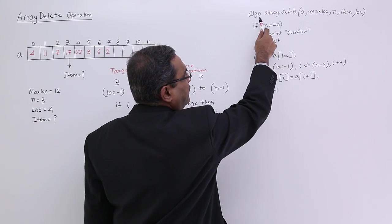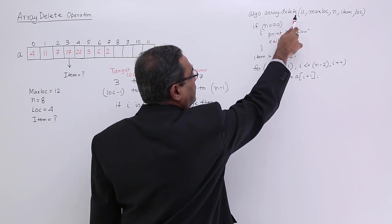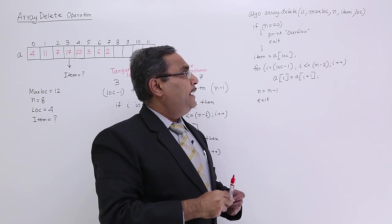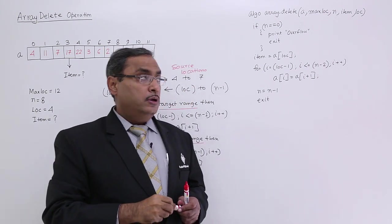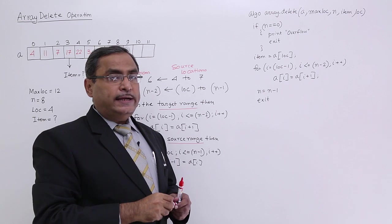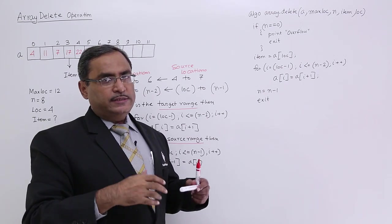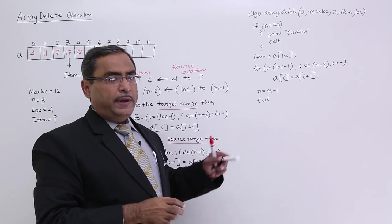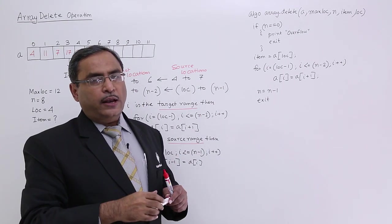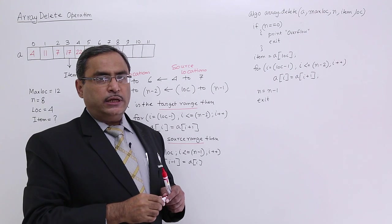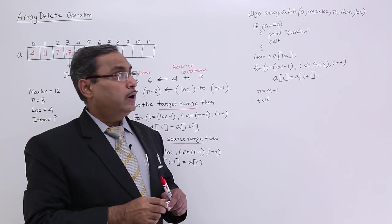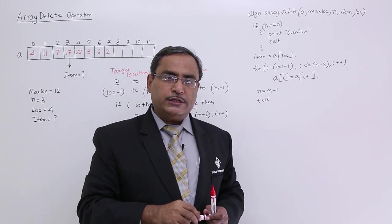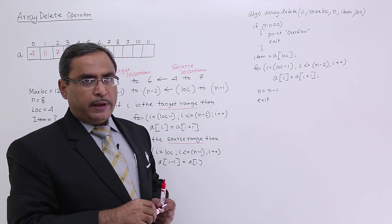So now in this way, algorithm array delete, I am passing a as input argument, max lock, n, item and lock. Out of these arguments, item is the output argument. So in C programming, item will be by call by reference. In case of n, the value of n is going to get changed within the algorithm, because after deletion, the number of data should be decreased by 1. So here in this n, in case of C programming implementation, n should be done by call by reference.